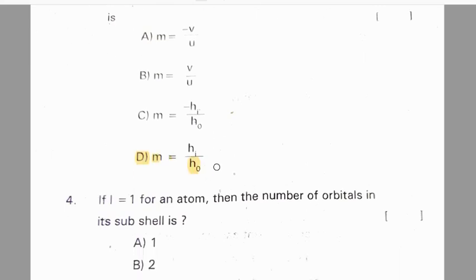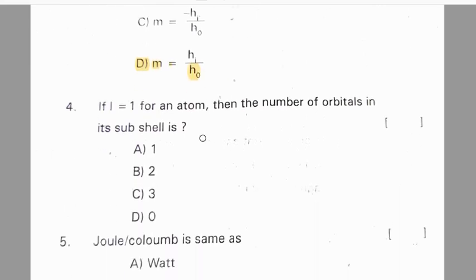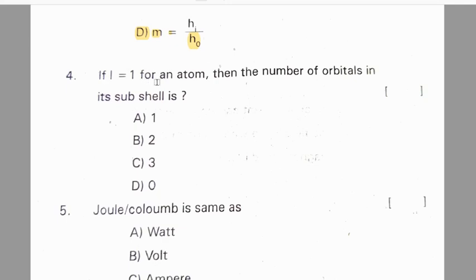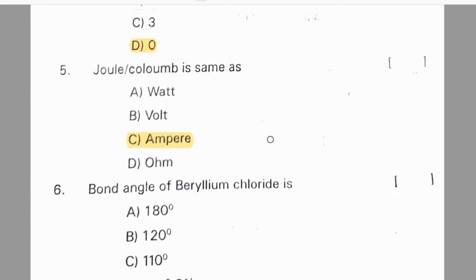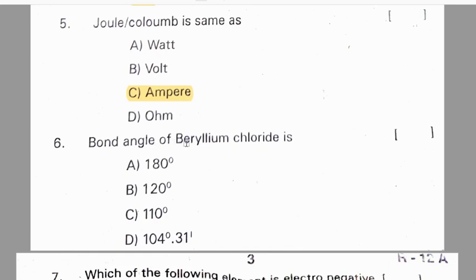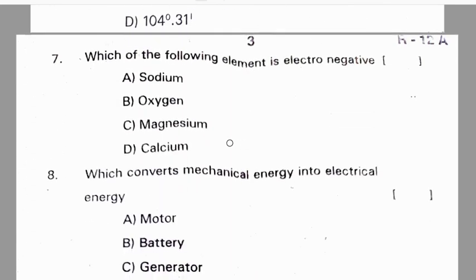Third question: the formula used to find magnification of lenses is m = hᵢ / h₀ (image height over object height). Fourth question: if l = 1 for an atom, then the number of orbitals in its subshell is zero. Fifth question: coulomb per second is the same as ampere. Sixth question: the bond angle of beryllium chloride (BeCl₂) is 180 degrees.